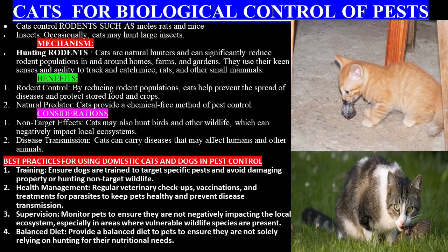Cats can carry diseases that may affect humans and other animals. Best practices for using domestic cats and dogs in pest control: ensure dogs are trained to target specific pests and avoid damaging property or hunting non-target wildlife. Regular veterinary checkups, vaccinations, and treatments for parasites keep pets healthy and prevent disease transmission. Monitor pets to ensure they are not negatively impacting the local ecosystem, especially where vulnerable wildlife species are present. Provide a balanced diet to pets to ensure they are not solely relying on hunting for their nutritional needs.